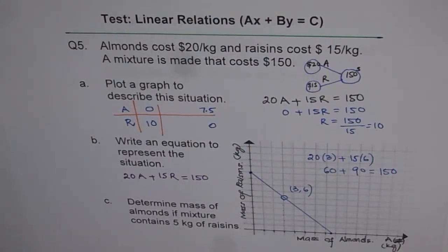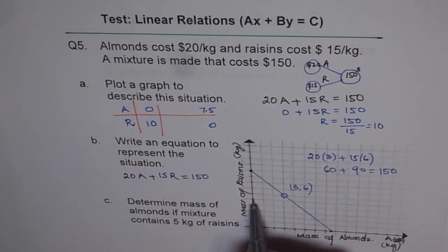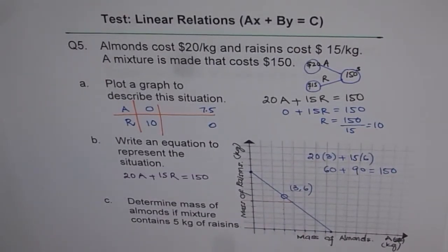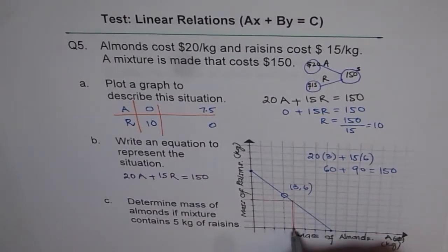So sometimes you may not get accurate results. Determine mass of almonds if mixture contains 5 kg of raisins. So 5 kg of raisins, 1, 2, 3, 4, 5. So we'll draw a line from here and see where it strikes. So it's kind of close. And we get something like this from our graph.